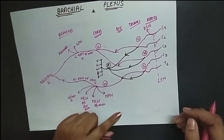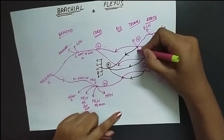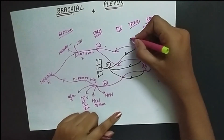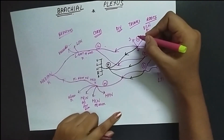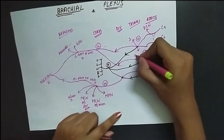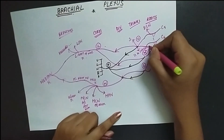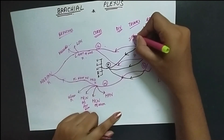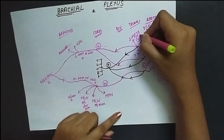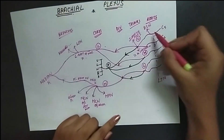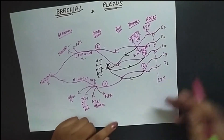Two more nerves arise from the upper trunk: the suprascapular nerve and the nerve to subclavius. So from this diagram we have the dorsal scapular nerve, the suprascapular nerve, and the nerve to subclavius all identified.